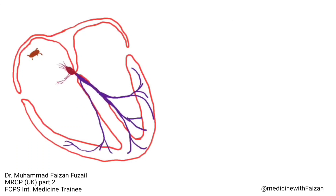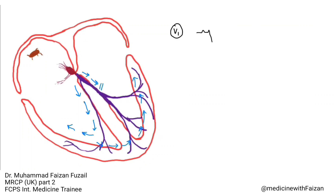In my lecture on left bundle branch block, we discussed that normally the right and left ventricles are depolarized simultaneously by the left and right bundle branches. But when the left bundle branch is blocked, the wave of depolarization travels down the right bundle branch to depolarize the right ventricle first, and then it travels through intramyocardial gap junctions towards the left ventricle to depolarize and contract it. So there is a delay in ventricular conduction. Since the QRS represents depolarization of both ventricles, the QRS duration is also prolonged — that's how the QRS complex will look in left bundle branch block.